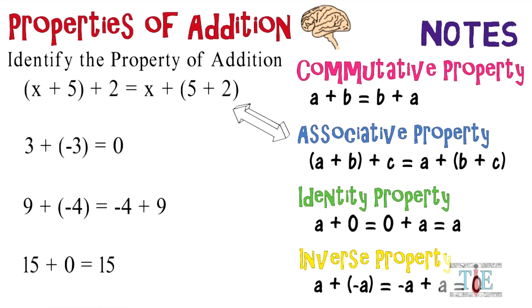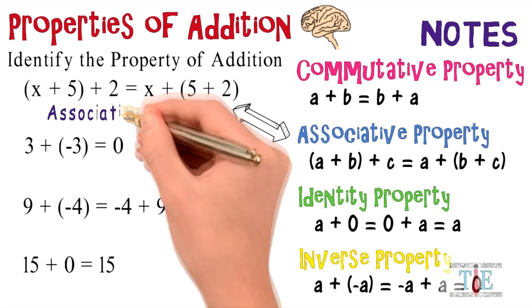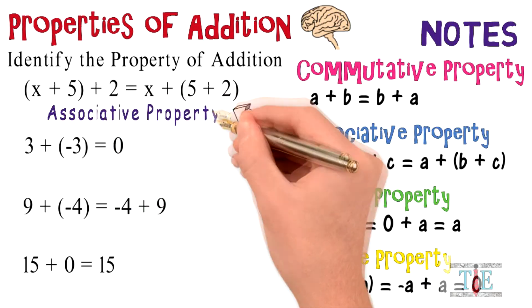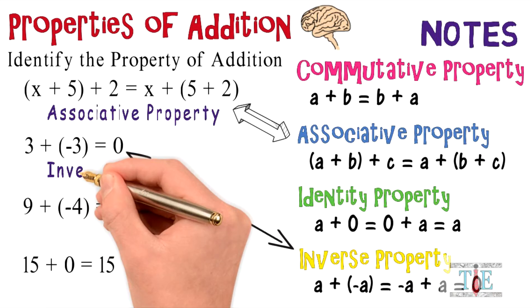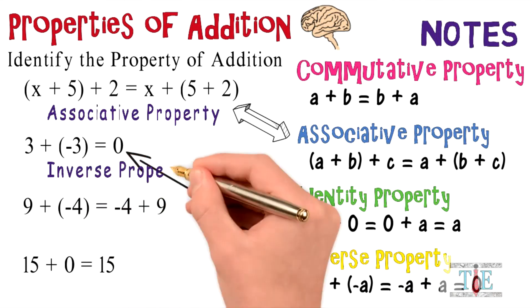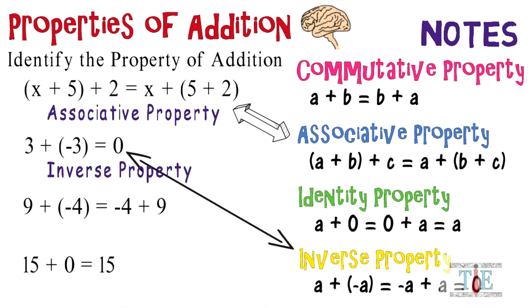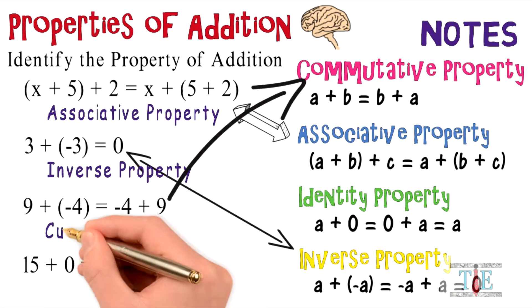first one, that matches up with the associative property. The second one lines up with the inverse property—notice it equals 0. Moving down to number three, that's going to match up with the commutative property because